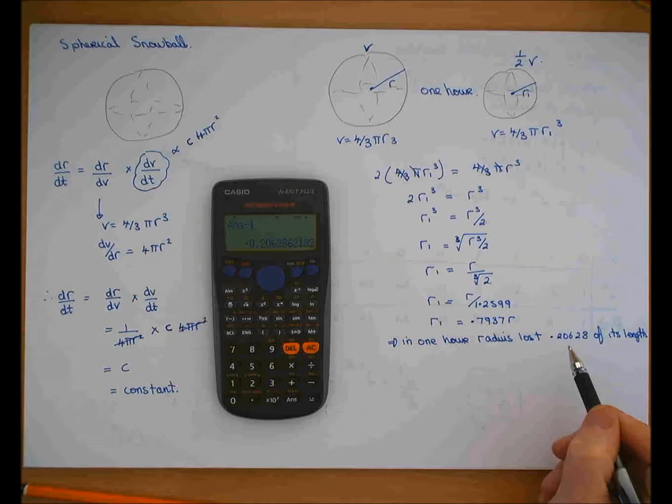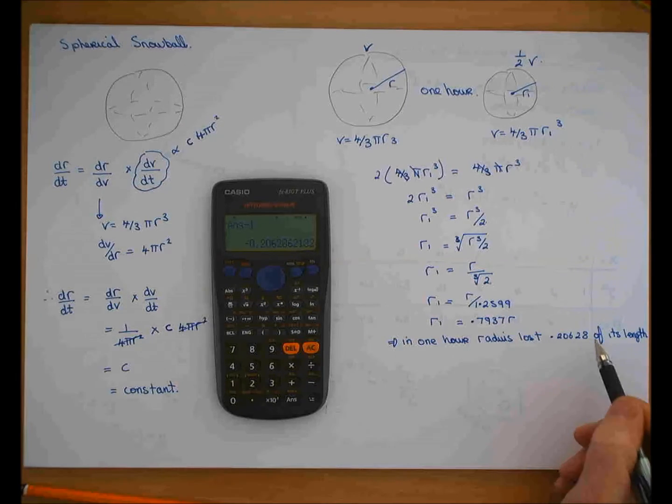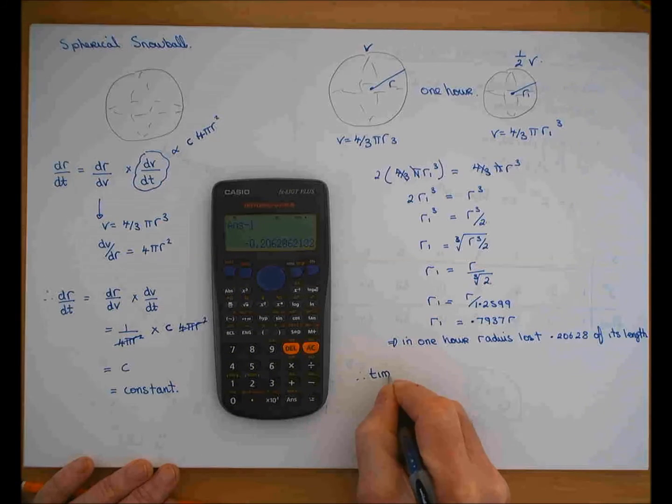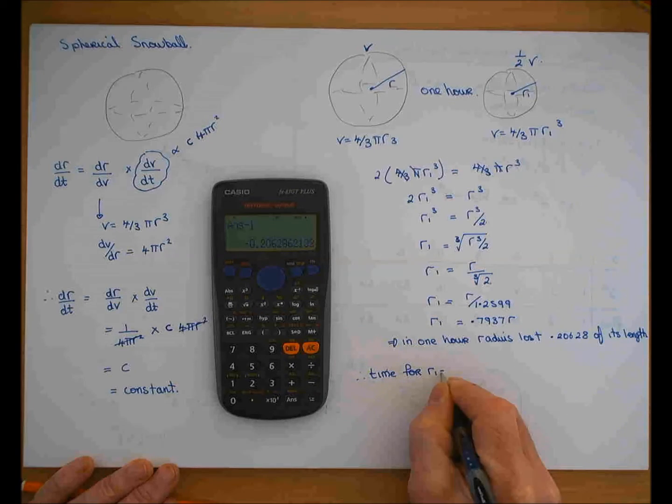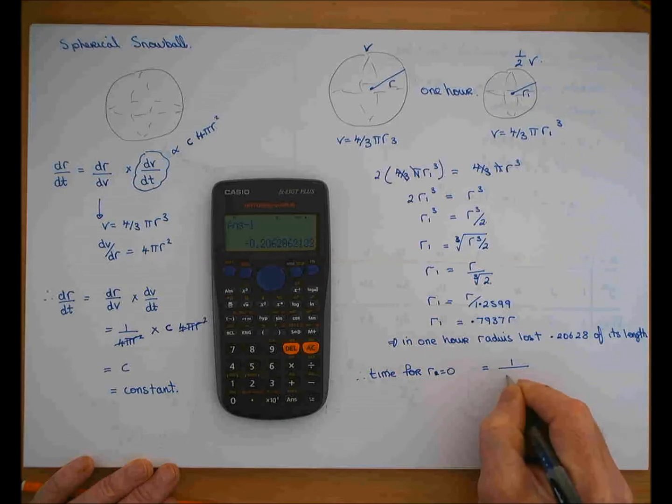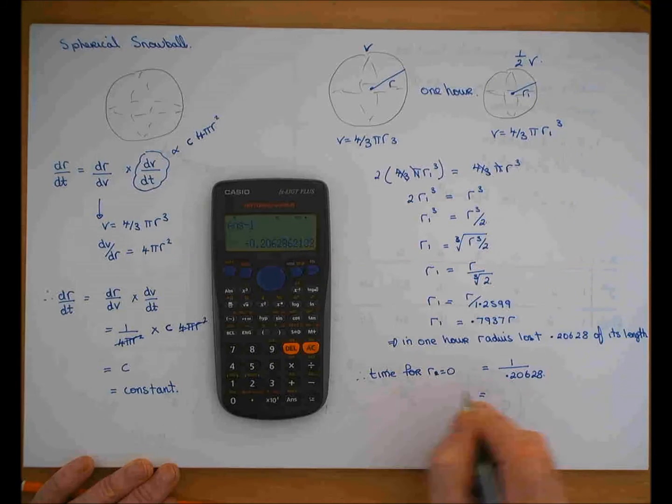In the next hour, it loses another 0.20628 of its length. So therefore, the time for r₁ to be 0, or the radius to be 0, is equal to 1 divided by 0.20628.